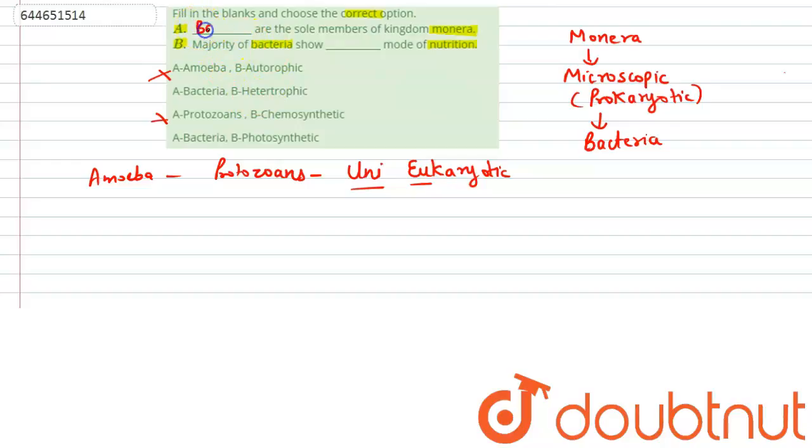Now the second point here comes: majority of the bacteria shows which kind of nutrition? Definitely the options left are heterotrophic mode of nutrition or photosynthetic mode of nutrition. Some bacteria do synthesize their own food, but they are not in majority. Majority of the bacteria are having the heterotrophic mode of nutrition.